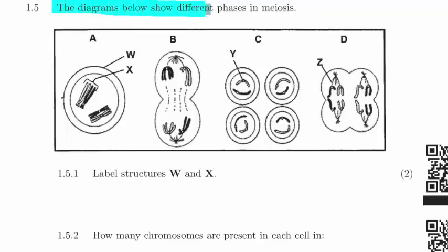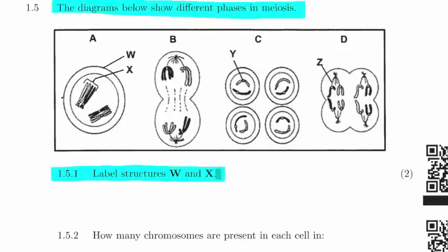The diagram below shows different phases of meiosis. Question 1.5.1 is asking you to label structures W and X.